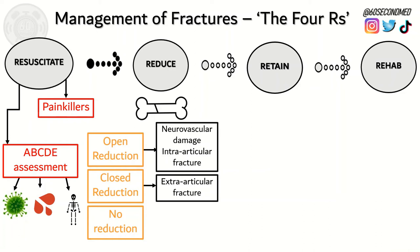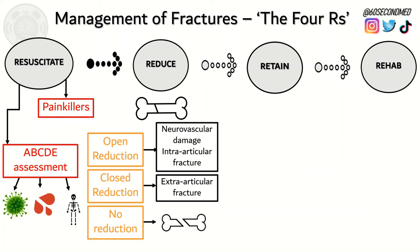Alternatively, a closed reduction is where we manipulate the fracture site through the skin, indicated with an extra-articular fracture not involving any joint spaces. No reduction is needed if the fracture is already not displaced and is already in the correct anatomical position.